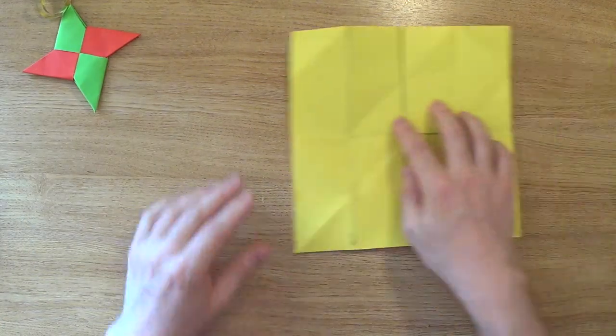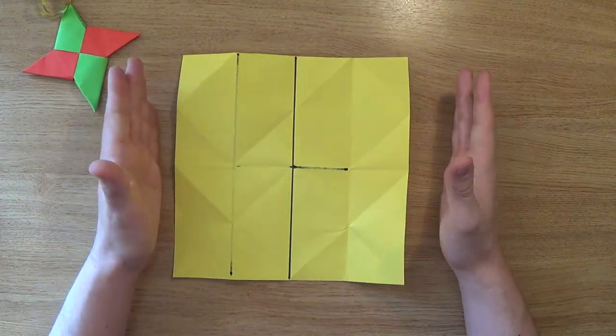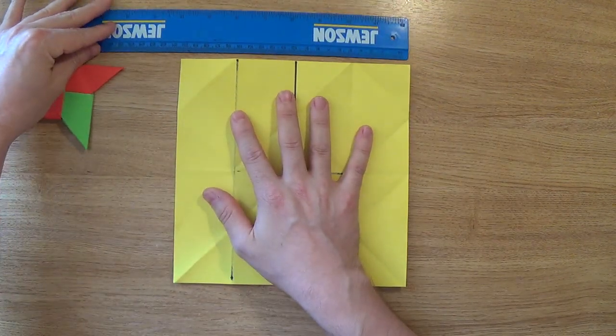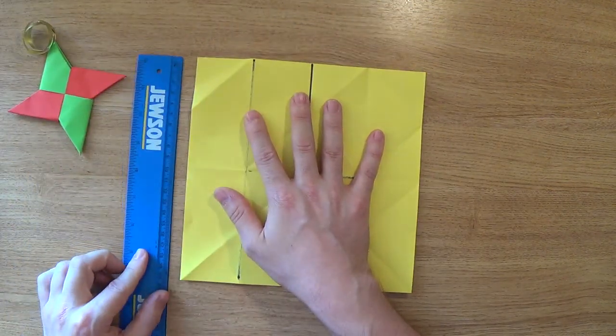Now we're going to start off with two sheets of square paper. I've cut this down from A4 so they are roughly 21cm by 21cm.